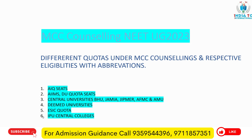You can clearly read it on your screen — different quotas under MCC counseling and respective eligibilities with their abbreviations and what these seats mean. Today we are going to discuss All India Quota seats, AIIMS seats, central universities like Banaras Hindu University, Aligarh Muslim University, Jamia, JIPMER, deemed universities with minority, management, and NRI category seats, and IPU central university eligibility quota seats. We have made a page-wise presentation with a five-second pause between every page so you can take a screenshot. It will be very helpful at the time of choice filling.